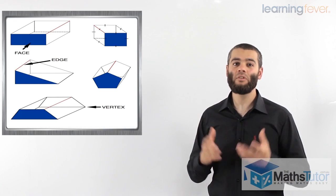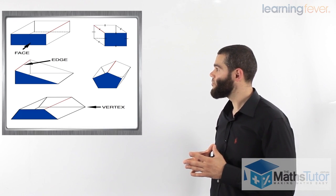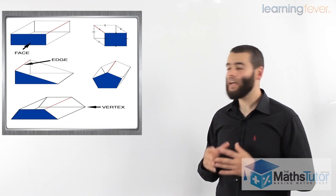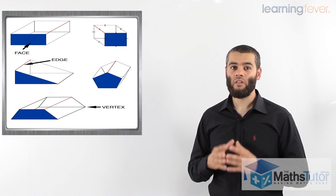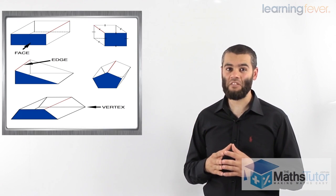why is it called pentagonal prism? Because the main face, the cross section, as you can see in blue, is the pentagon. And the trapezoidal prism, the cross section, the main face there is the trapezium.